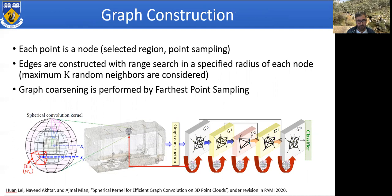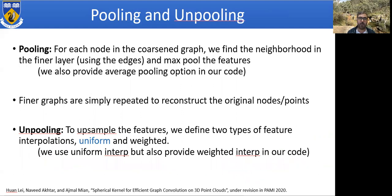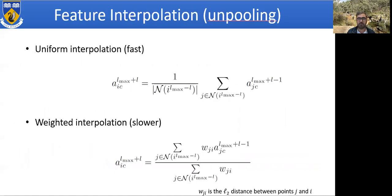Here is a rough overview of our graph structure. Each point is a node and edges are constructed with range search at a specified radius for each node — a graph structure where every node is connected to a certain number of other nodes in a given neighborhood. We then coarsen the graph as we go deeper in the network using farthest point sampling. We also define pooling and unpooling operations, which were not precisely defined in previous point cloud architectures. We also allow uniform interpolation as well as weighted interpolation for feature interpolation.